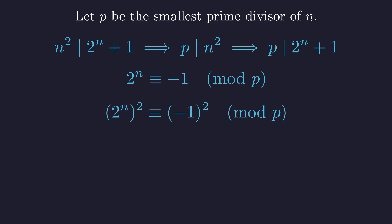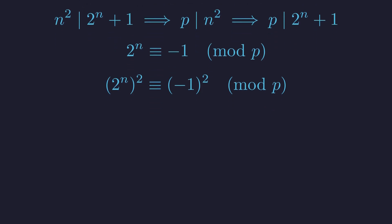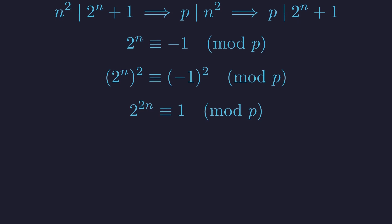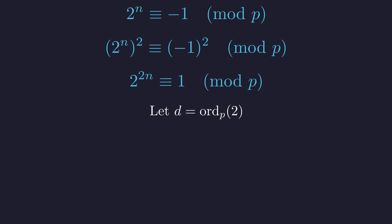So let's square both sides of the congruence. This simplifies to 2 to the power of 2n is congruent to 1 modulo p. This brings in a crucial concept from group theory: the order of 2 modulo p, which we'll call d. This is the smallest positive integer such that 2 to the power of d is 1 modulo p.